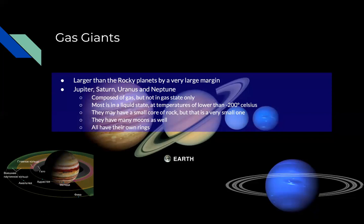The gas giants typically have more than one moon at minimum, and all of them have their own ring system like Saturn. All of them have their own ring system — it's just that Saturn's is the most prominent.